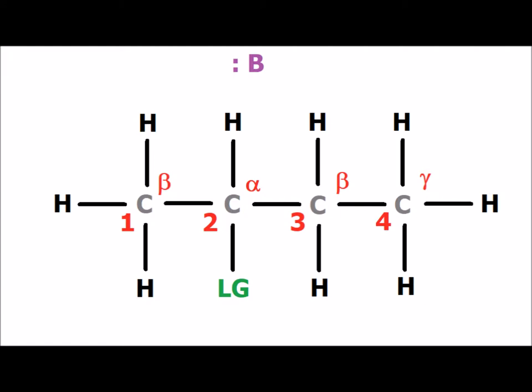Since the number 2 carbon holds the leaving group, it is our alpha carbon. Notice that next to it, the number 1 and number 3 carbons are the beta carbons, and the number 4 carbon, 2 carbons distant from the alpha, is the gamma carbon.